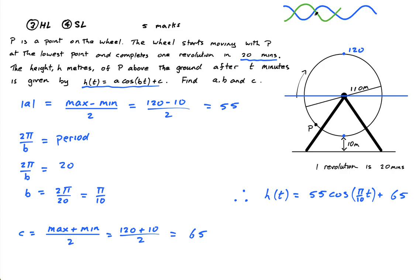How do I flip this function like this? Well, I just make it negative. I make this part negative here. So I do want the negative cosine function. Now, it's worth, and I can write then, A is negative 55, because it says find the values of A, B, and C. A is negative 55. B is π over 10. And C is 65.